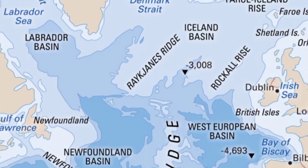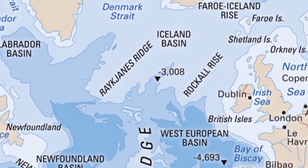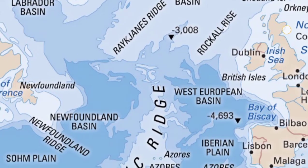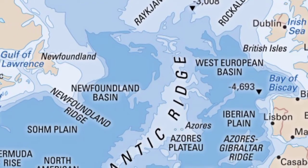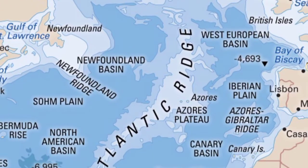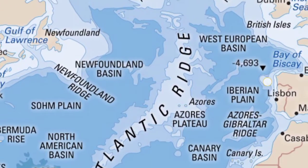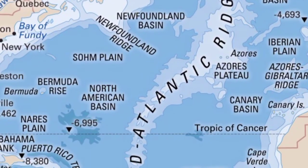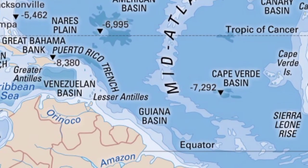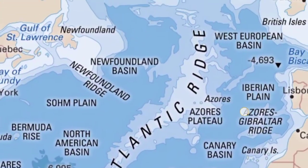Reykjanes Ridge, Shetland Island, Faeroe Island, Bay of Biscay, Iberian Plain, West European Basin, and this is the Mid-Atlantic Ridge.